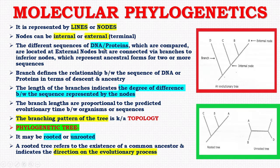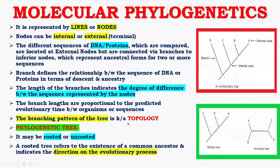Different sequences of DNA or proteins which are compared are located at external nodes but are connected via branches to internal nodes, which represent ancestral forms for two or more sequences. Branch defines the relationship between the sequence of DNA or proteins in terms of descent and ancestry. The length of the branches indicates the degree of difference between the sequences represented by the nodes. The branching pattern of the tree is known as topology.